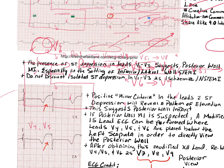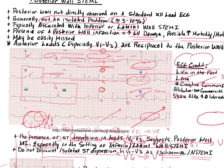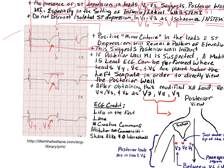Do not discount ST depression in V1 through V3 as just ischemia or a non-STEMI, especially in the setting of an inferior or lateral wall STEMI. When we flip and enlarge those leads and apply the mirror test, what was depression now looks like massive ST elevation — a positive mirror test confirming posterior wall infarct.